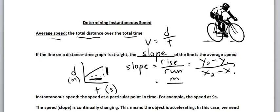And the run, that's this distance, that is measured in seconds. So the units for rise over run would be meters over seconds, or meters per second, which is a unit for speed.